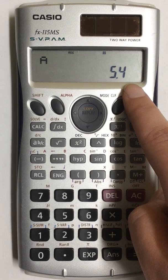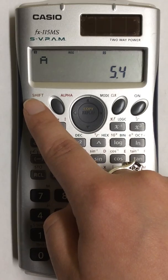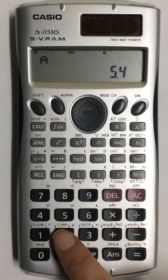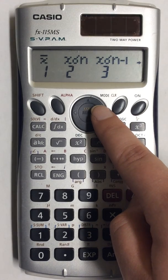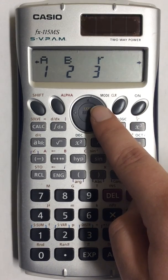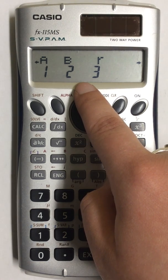To go back and find your slope press shift and number two again and then press the over arrow twice to get back to your regression variables.